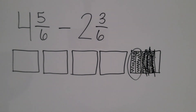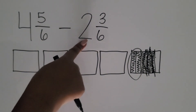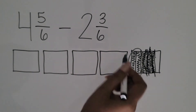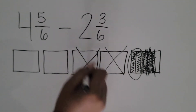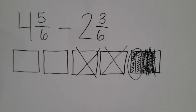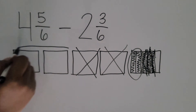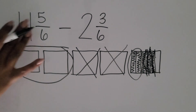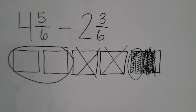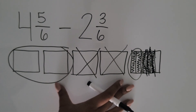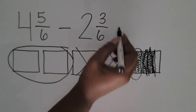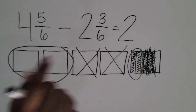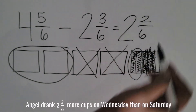Is there anything else to subtract? Yes — students say they still need to subtract two wholes. We have four wholes and we can subtract two of them. How many wholes remain? One, two — there are two wholes remaining. Follow up: what's the difference of four and five-sixths minus two and three-sixths? Can we see that in your picture diagram? Yes — we can see there are two wholes and two-sixths remaining.